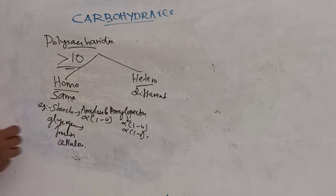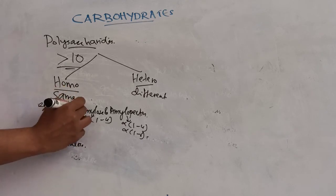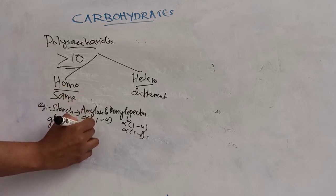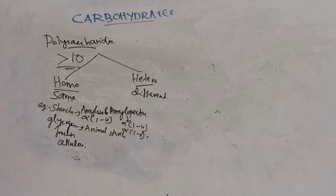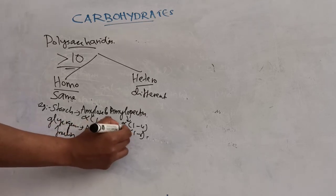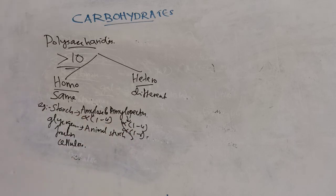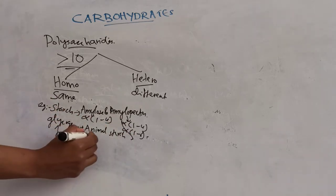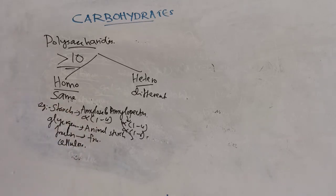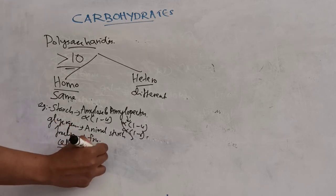Glycogen is animal starch — the starch present in plants is called starch, while glycogen is the animal form. Glycogen is also a polymer of D-glucose units linked by alpha 1,4 and alpha 1,6 linkages. Inulin is a polymer of D-fructose. Cellulose is made up of D-glucose units linked by beta 1,4 linkages.